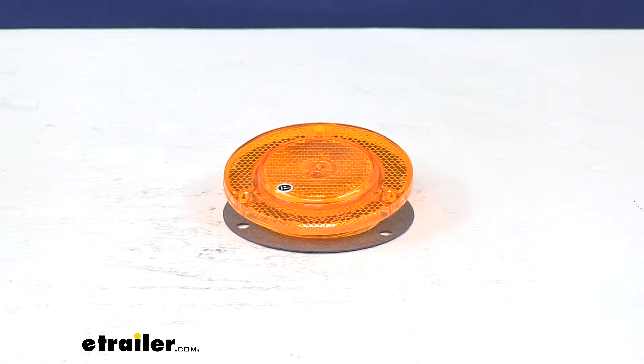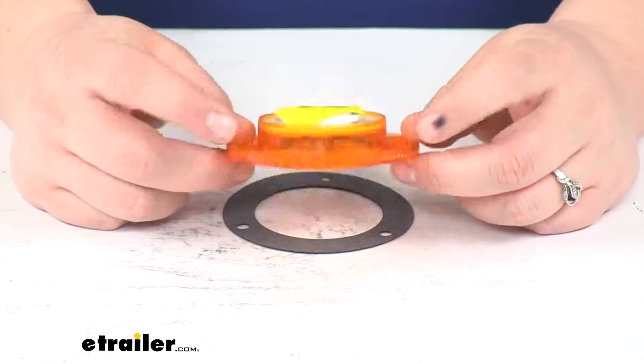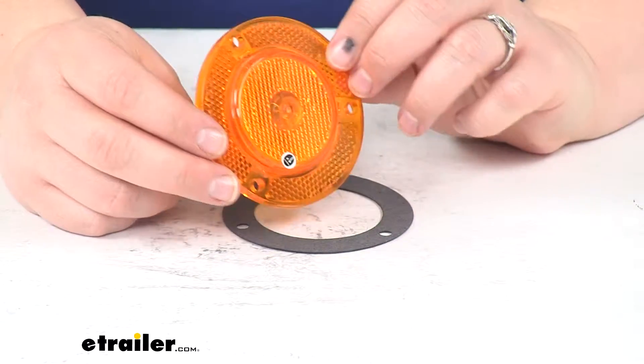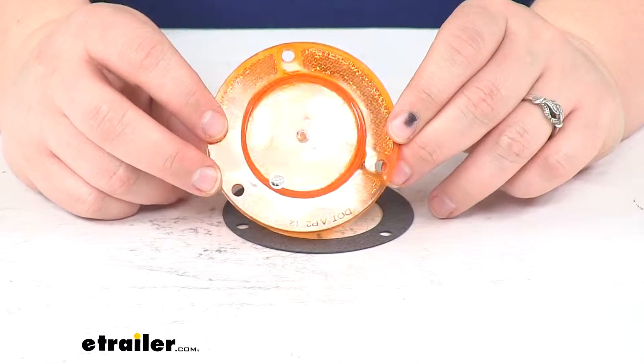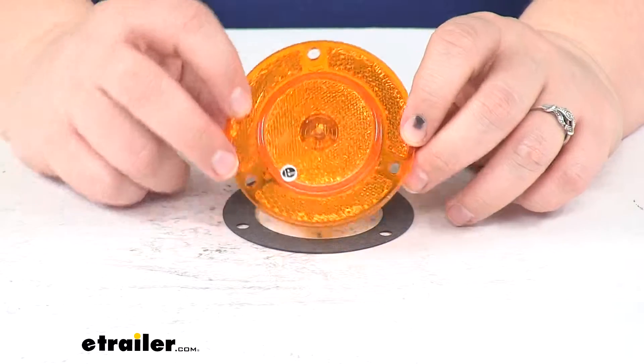Today we're going to take a look at the Peterson trailer clearance or side marker light with reflex reflector. This is a nice round light that helps to give better visibility for your trailer with that reflector as well as the light function.